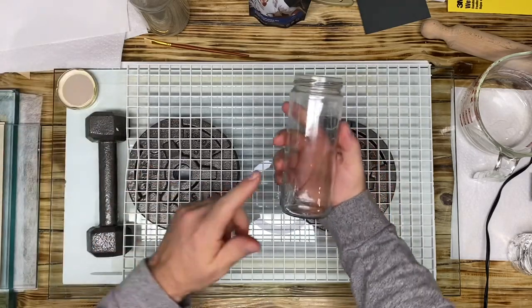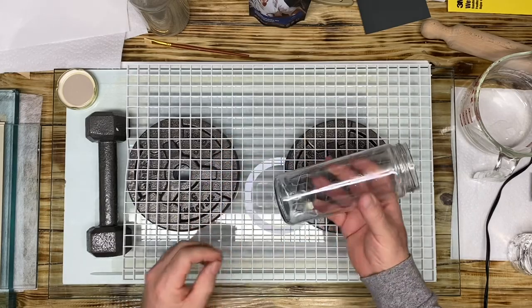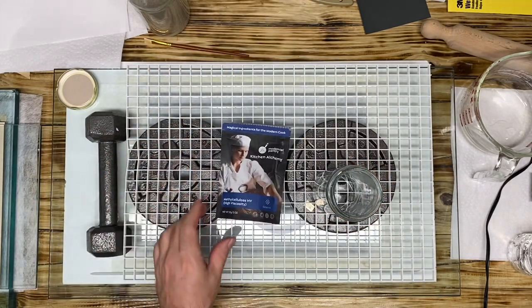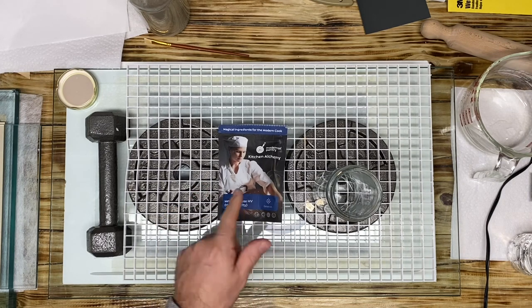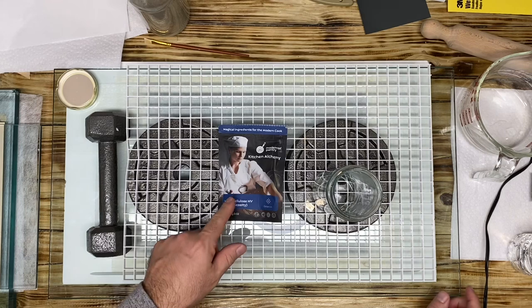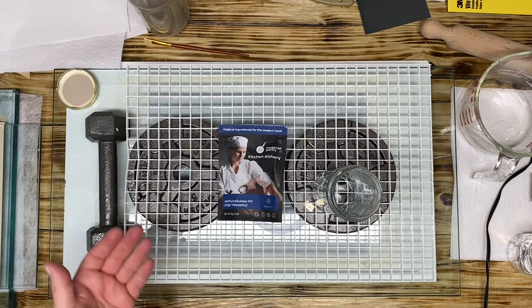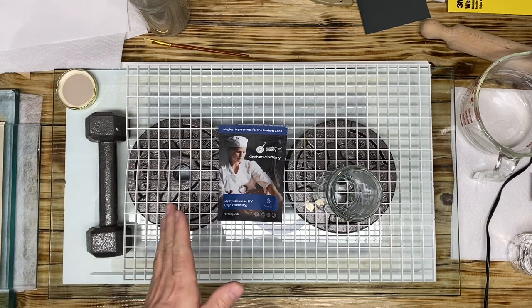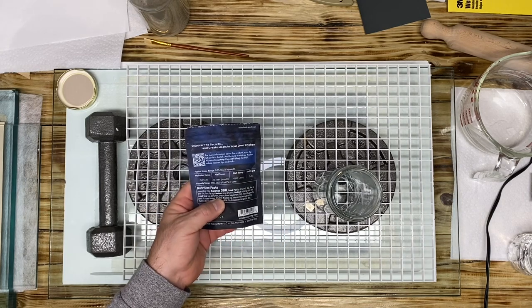Here we have just a plain clean glass jar that I washed out. Here we have methyl cellulose. Now I buy it from Amazon, it is an actual cooking grade that you can use for cooking, and a lot of people use it in Latino cooking. It's very inexpensive.